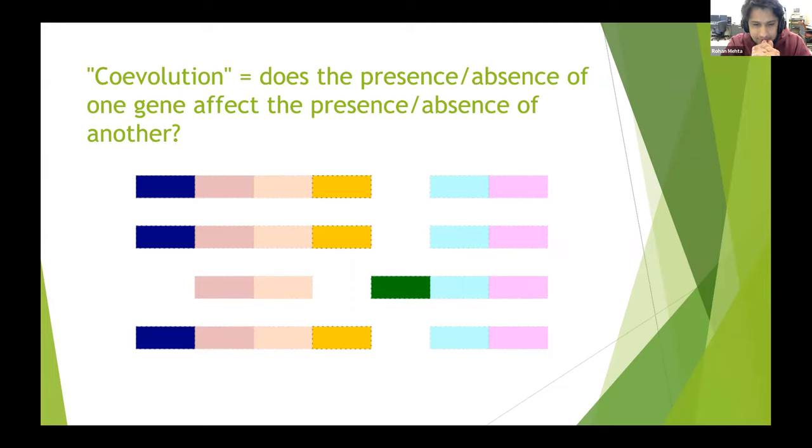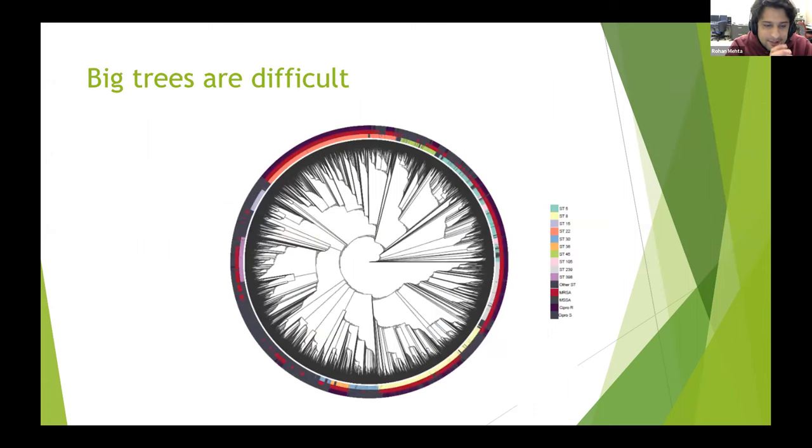There have been many methods that try to detect gene interactions using these presence-absence patterns. What I was trying to do is come up with a method that works for extremely large datasets, on the order of thousands to tens of thousands of samples. This is an example tree based on the database I was using. Often when you need to do co-evolution stuff, you need to look at the tree and perform computations across the tree. When trees get really big, this gets computationally intensive and very slow.